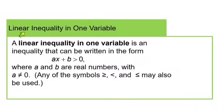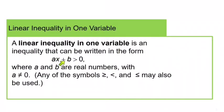Now, we're looking at linear inequalities. A linear inequality in one variable is one that can be written with an x term and a constant on the left and a zero on the right. The symbol is not important — any inequality symbol can be used — but you have to be able to get it down to one x term and one constant. We can't have x squared, x to the cube, square root of x, or anything with an x in the denominator.